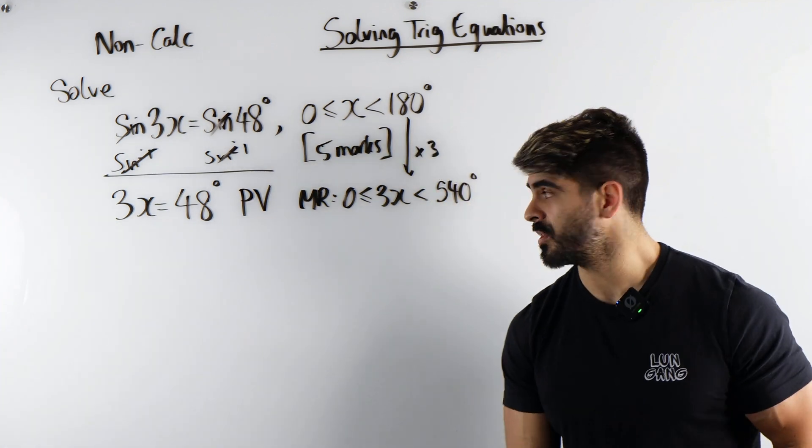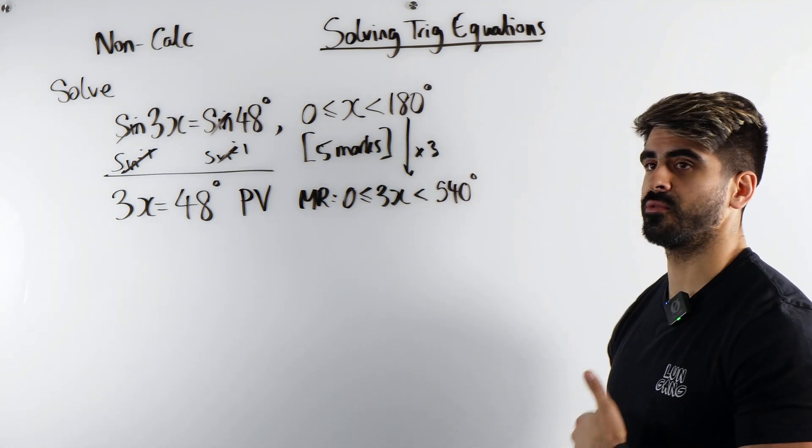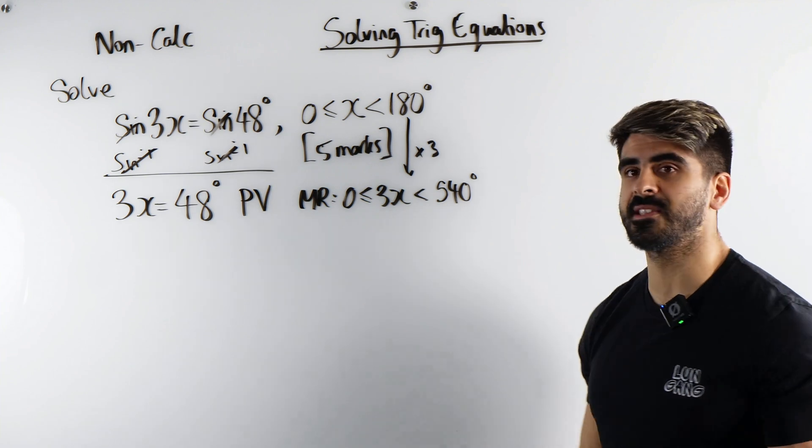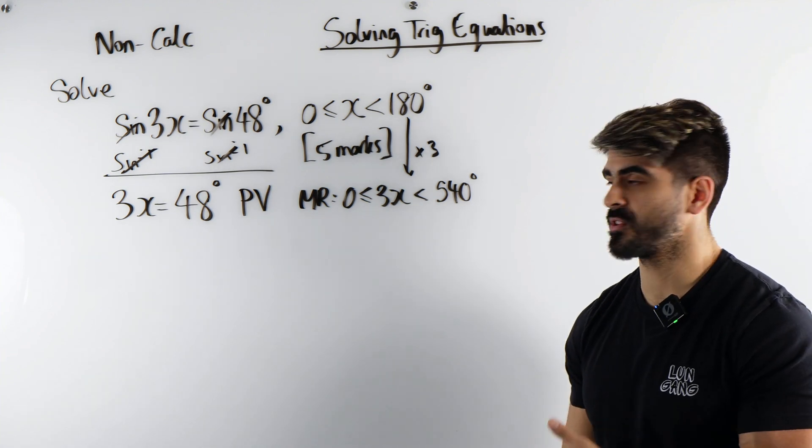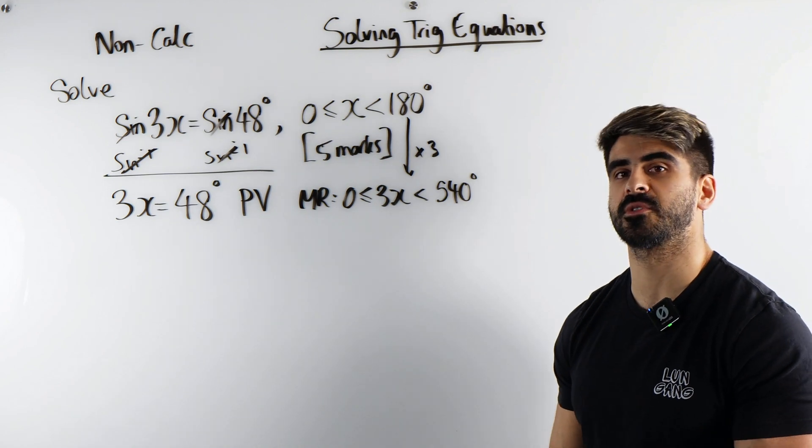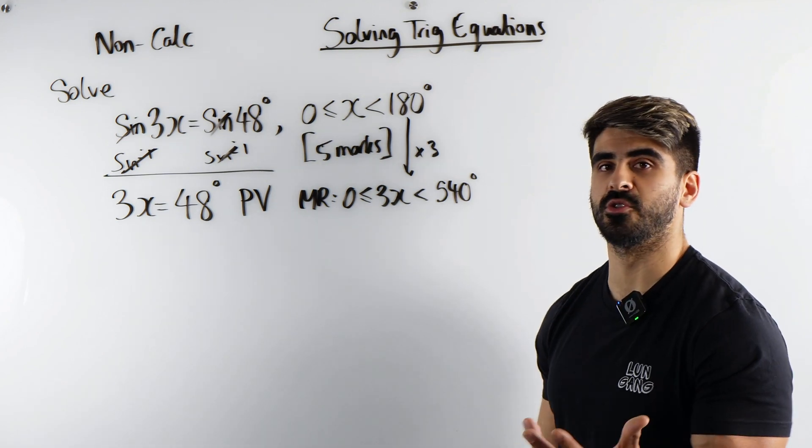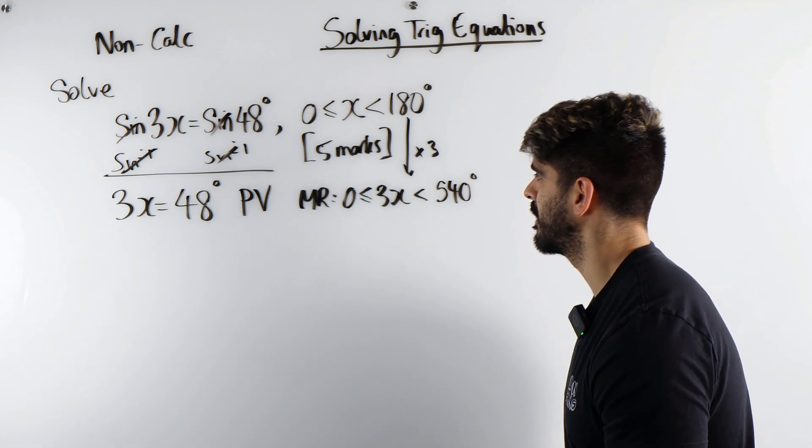Now there are some rules you just need to remember. They're very easy and they just come from the graphs, but you don't need to draw the graph every single time. I'd much rather that you draw the graph than use the cast diagrams. That's just an L method.